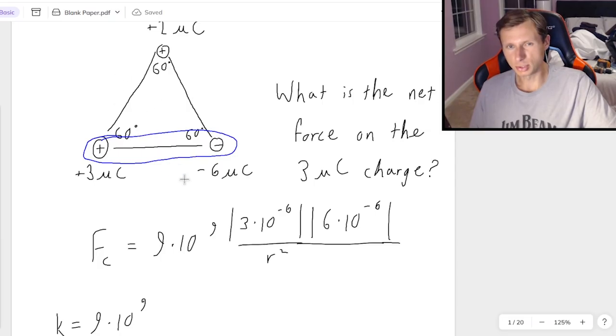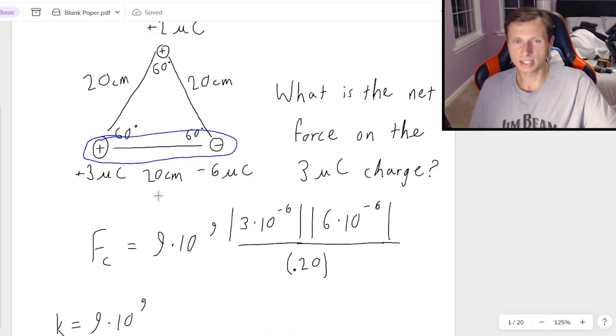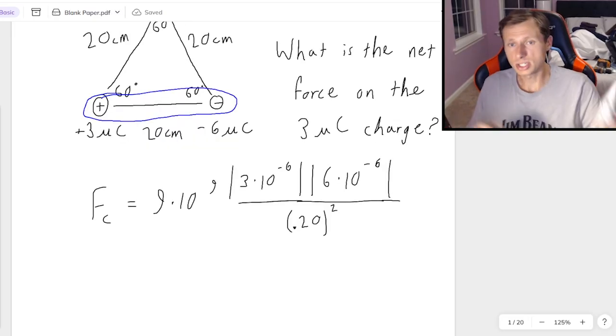Oh, and I forgot to give the distance between these. All of these are going to be 20 centimeters apart. Since it's an equilateral triangle, every side is 20 centimeters. So I plug in 20 for the radius. Just kidding. It's 0.20, because centimeters need to be converted to meters. So move the decimal place over twice, 0.20. And yes, that's squared.